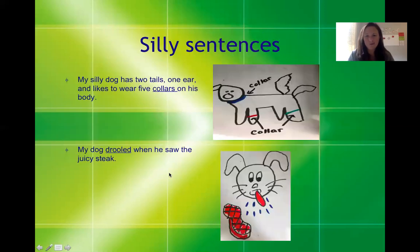Mrs. Holmes made some silly sentences to go along with it to kind of help you understand what to do. So I wrote, my silly dog has two tails, one ear, and likes to wear five collars on his body. And then I went ahead and drew a picture of my silly dog. And because I wasn't sure if my teacher would know what I meant, I went ahead and I labeled the collar. And then I underlined it, and then I stopped and looked for a capital and a period.